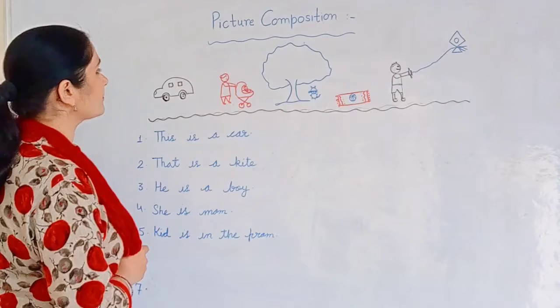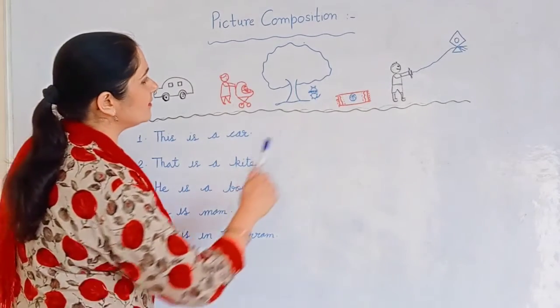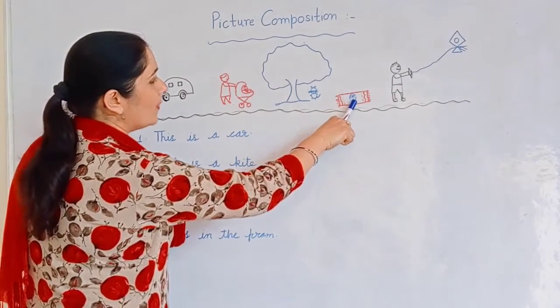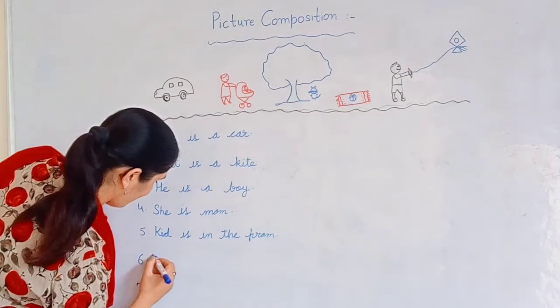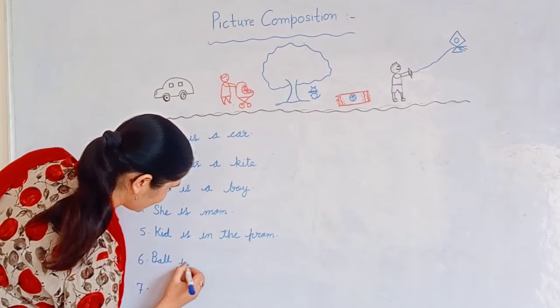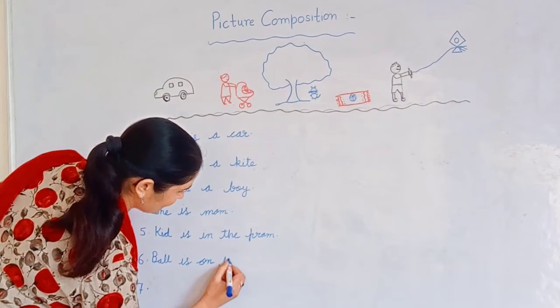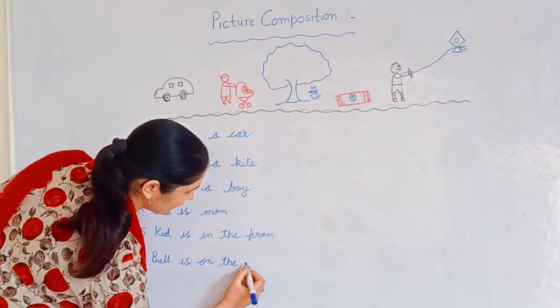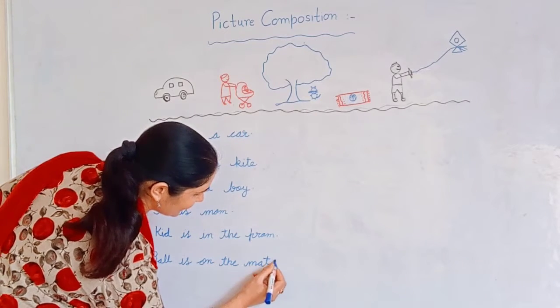Next, on. So we will find on. Yes, ball is on the mat. You will write small sentences like this.